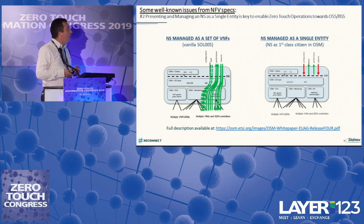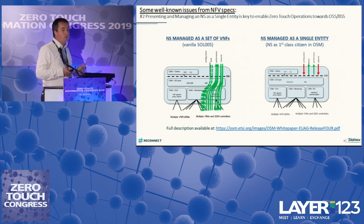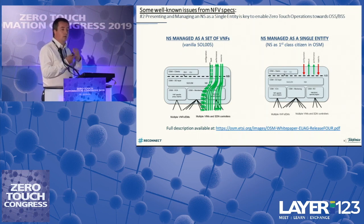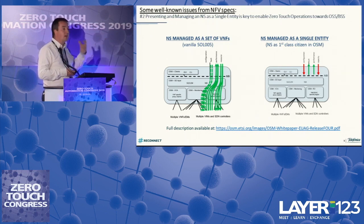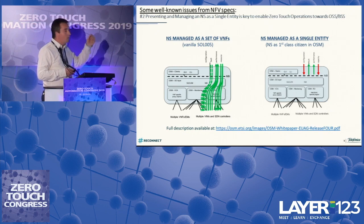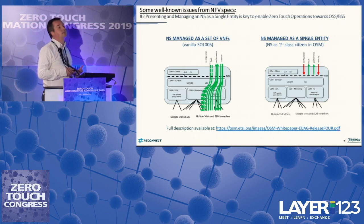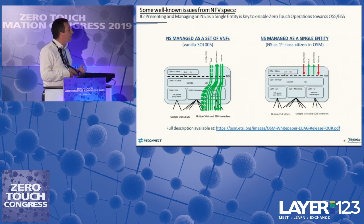What OSM tries to do — and has achieved — is to deal with network services and network slices as objects that have their own lifecycle. So when you interact from upper layers, like the OSS, you are operating at a network service or network slice level. This is something beyond the current state of the standards, and it is very useful for hiding the complexity of how we build the networks.